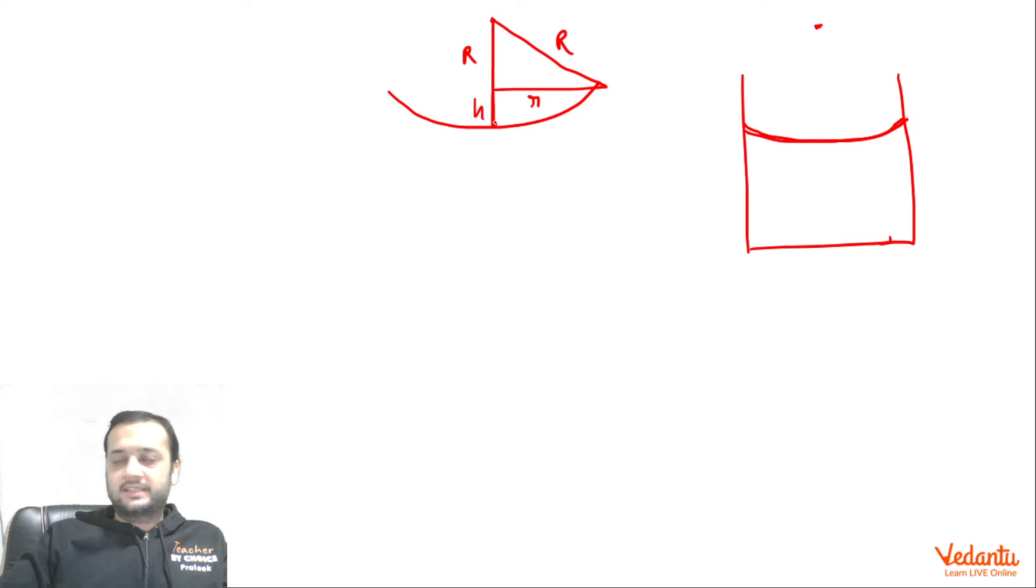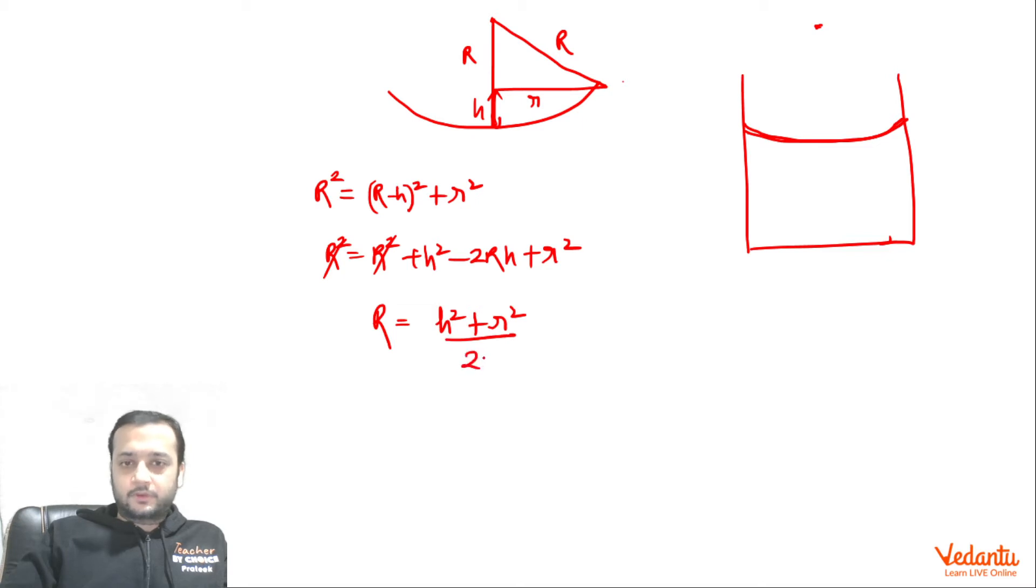First of all, if I draw the scenario, this is the top surface. So we can say that if this is the center of curvature of this surface, this is capital R, this will be small r and this will also be capital R. This value IIT has given as h, small h. So we can say that in this triangle, which is Pythagorean triangle, r square will be equals to (r minus h) square plus small r square. This becomes R² = R² + h² - 2Rh + r². This will cancel out and from here we get R as (h² + r²) divided by 2h.